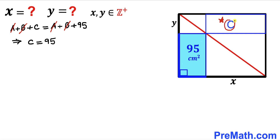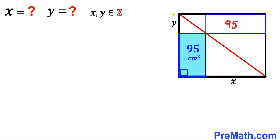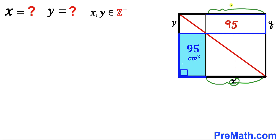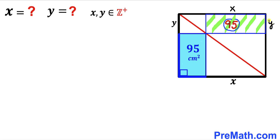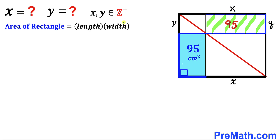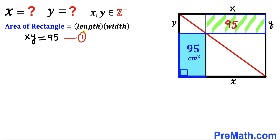So the area of the rectangle represented by C turns out to be 95. We can see that this segment length is y, so the corresponding segment is also y. Likewise, if this segment length is x, then the corresponding segment is also x. Focusing on this rectangle whose area is 95, with length x and width y, and recalling the area formula — area equals length times width — we get x times y equals 95. This is equation number one.